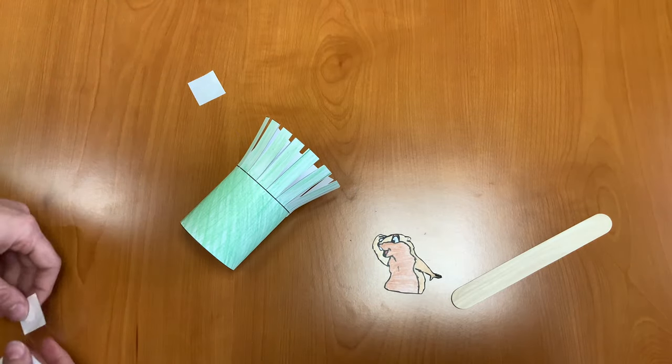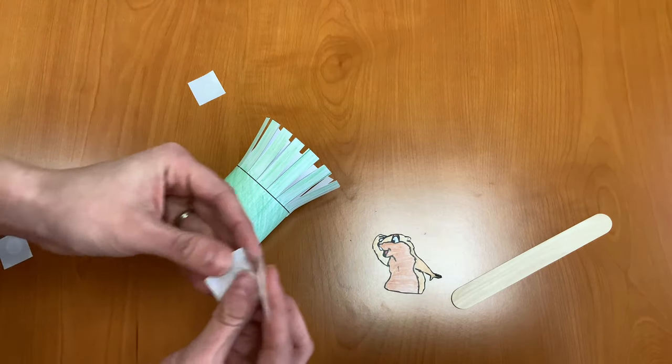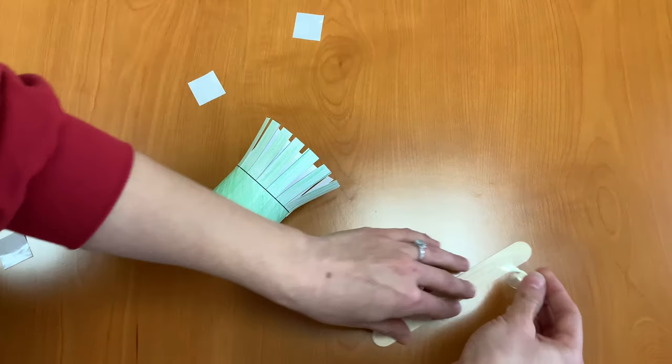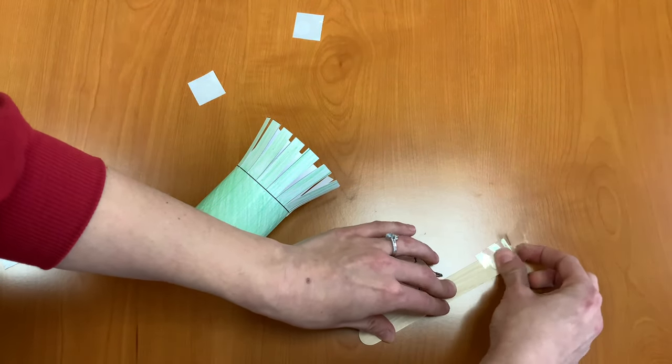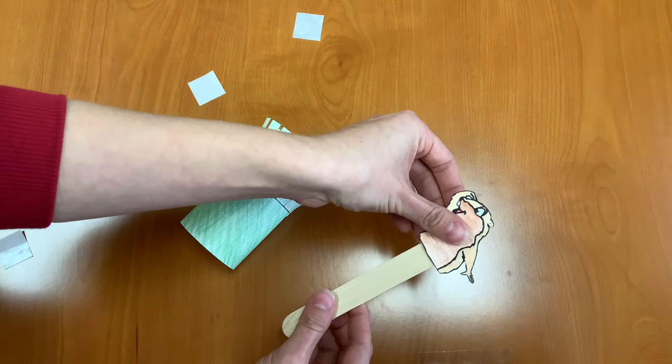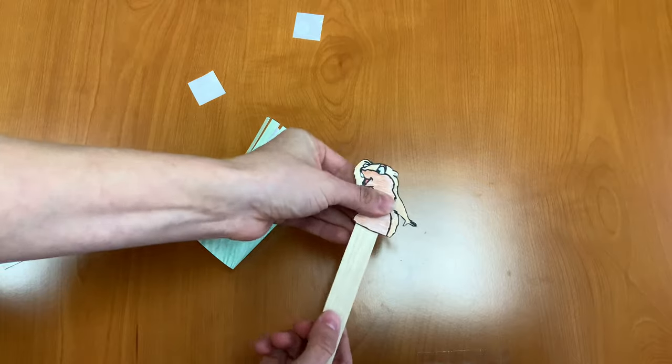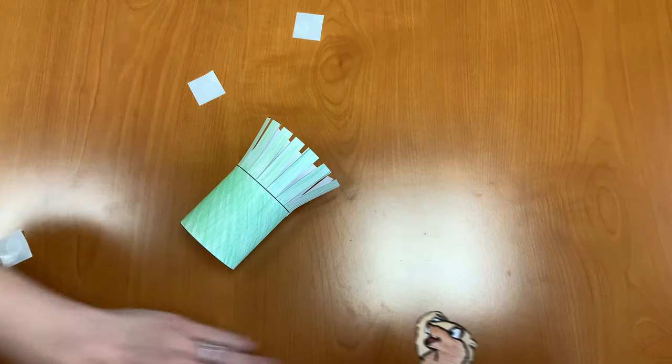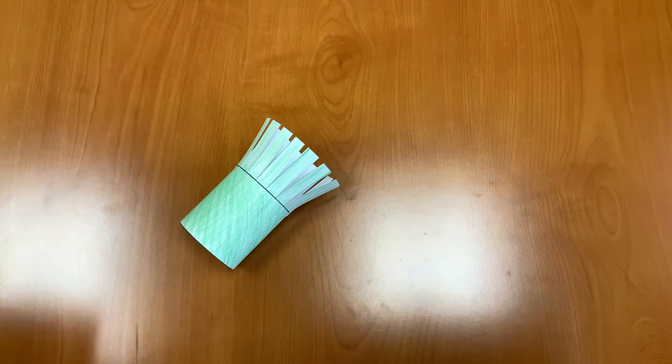Now with our last glue dot, we're going to put it onto our popsicle stick towards one end and we're going to attach our groundhog to the popsicle stick. And now our craft is completed.